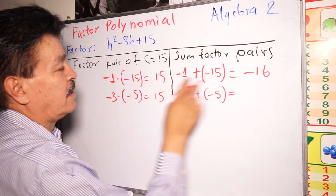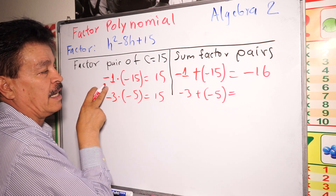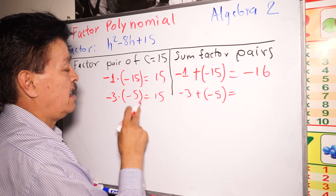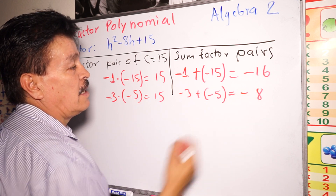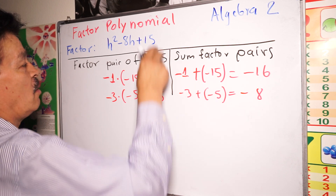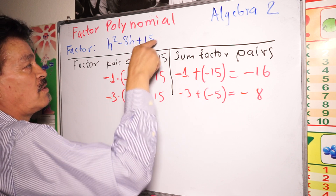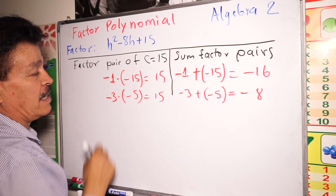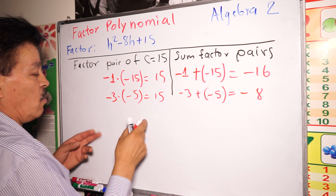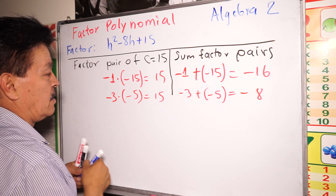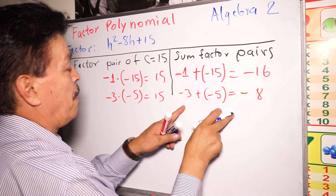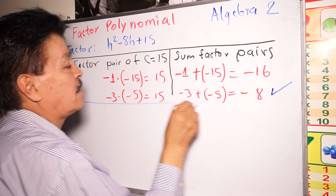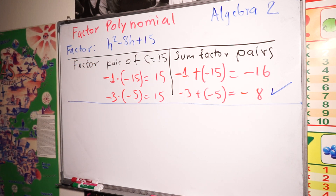Negative 1 plus negative 15 equals negative 16. Negative 3 plus negative 5 equals negative 8. So which factor pair multiplies to 15 and also adds to negative 8? It's the second one: negative 3 and negative 5, giving a product of 15 and a sum of negative 8.